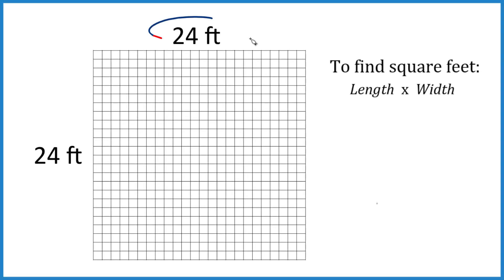Let's find the area of a 24 foot by 24 foot square here. This could be a patio or a garden. So here's how you do it. Think of it this way.